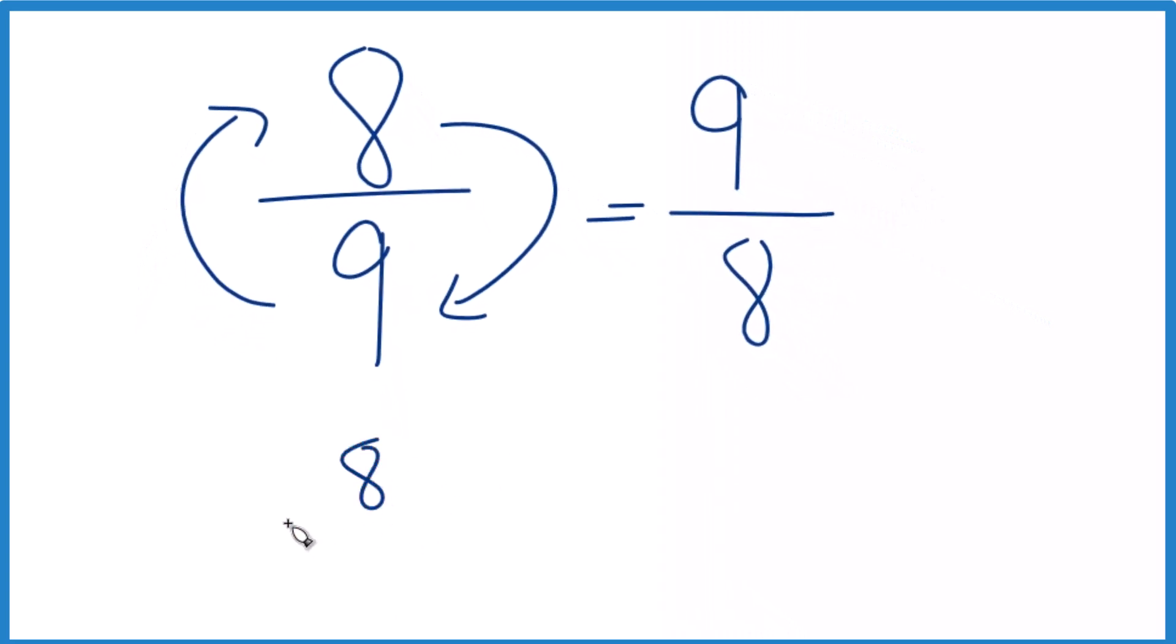We can check that. We can take eight-ninths and multiply that times the reciprocal, nine-eighths. And when we do that, if we did it correctly, we get one.